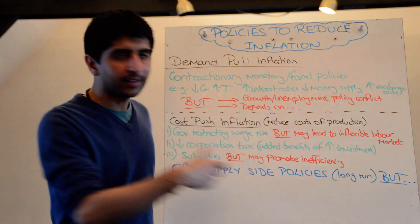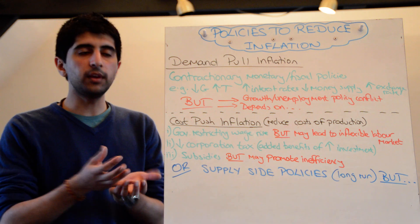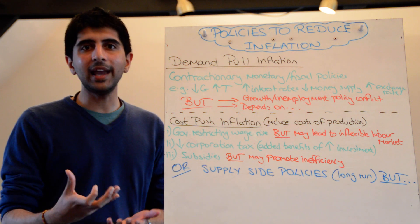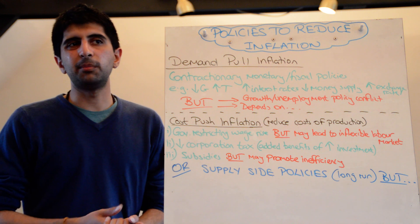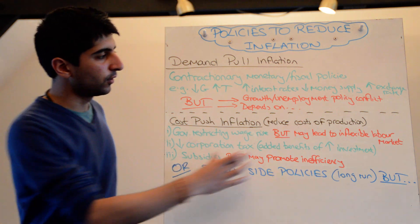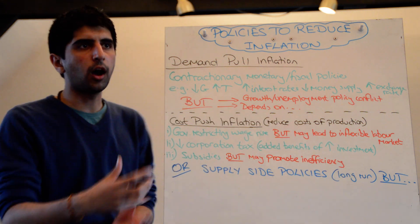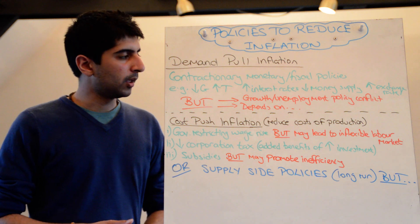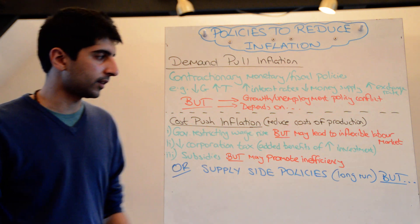The problem with restricting wages is that it might lead to an inflexible labour market. If you don't allow wages to increase when people are doing a good job, you might negate how hard workers work — workers might become fed up and not want to be productive. It might also be hard to recruit the best staff if you can't make positions lucrative by offering higher wages.